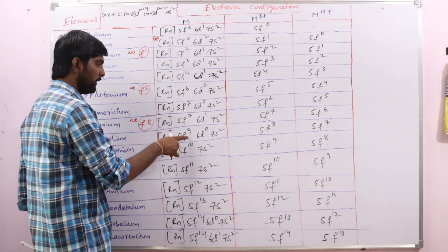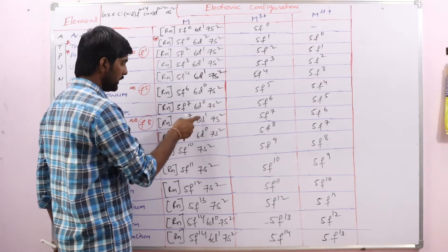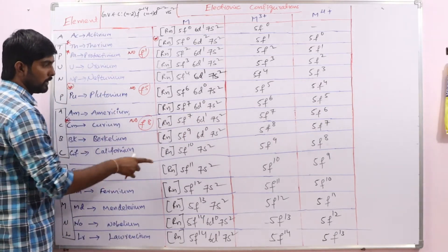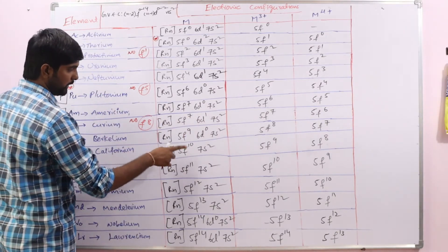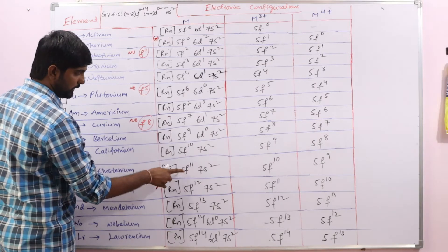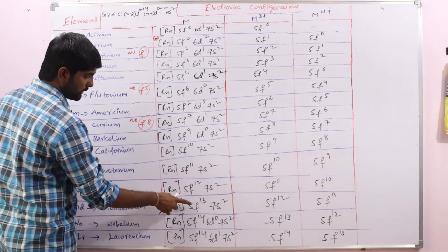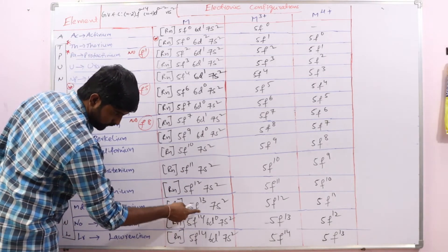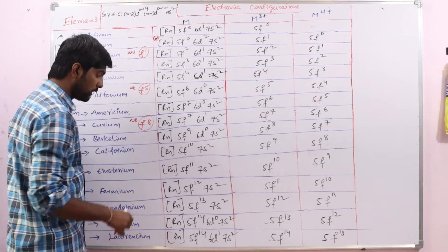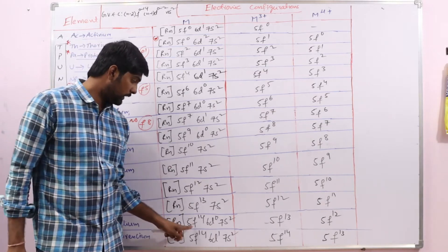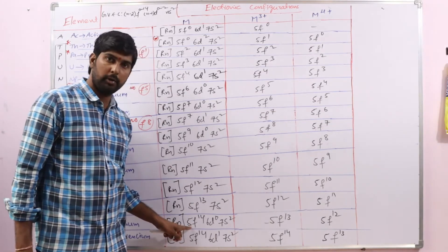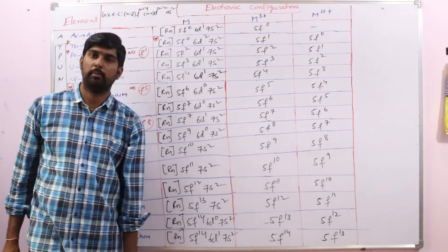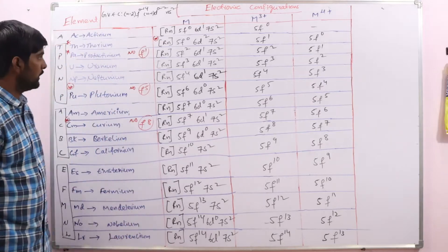After curium, the next elements follow: F9, then F10, F11, F12, F13, F14. When 14 electrons are filled in the 5F orbital, the next electron goes to the 6D orbital.